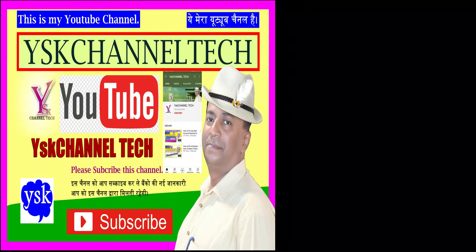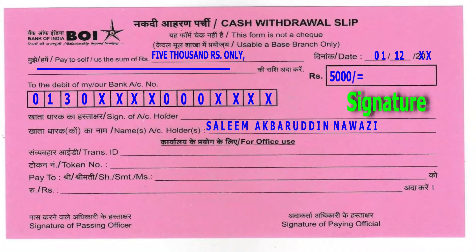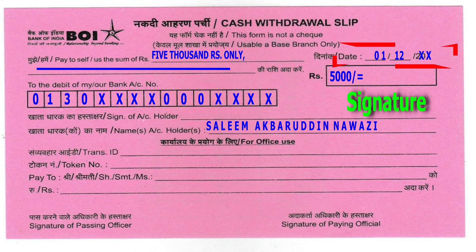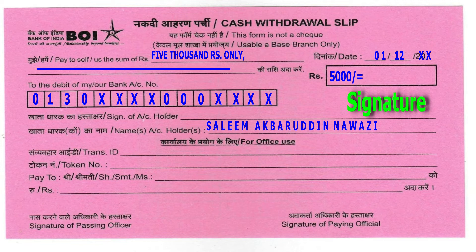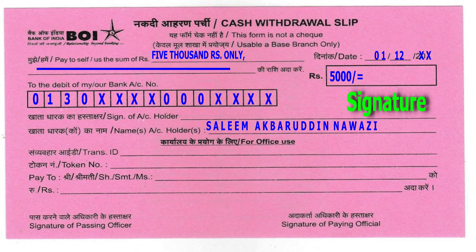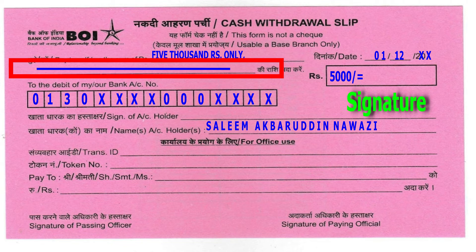This is a cash withdrawal slip. We have to check the date here. This is the column for the description, and then there is another column that can be written.